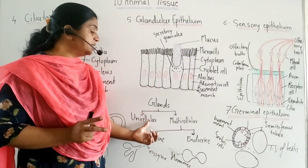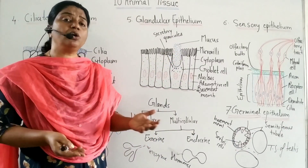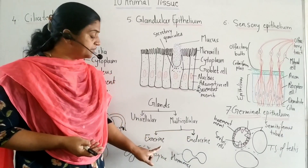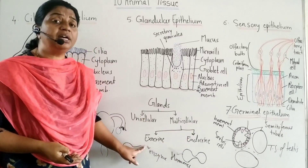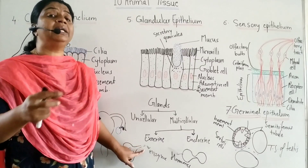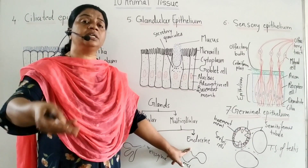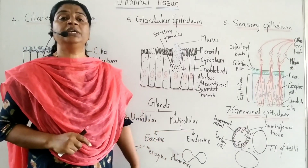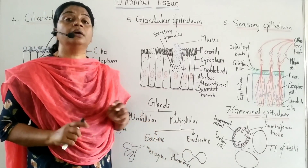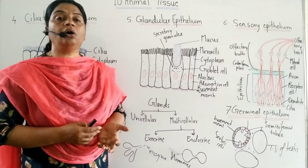Glands are of two types: unicellular or multicellular. Unicellular gland — for example, goblet cell. Multicellular gland means having a number of cells — example, salivary gland. Depending on the mode of secretion, they are divided into two types: exocrine and endocrine. A gland having a duct is called an exocrine gland; a ductless gland is called an endocrine gland. Exocrine glands carry their secretion to the site via a duct; endocrine glands pour their secretion directly into blood, which carries it to the site of action. Generally, exocrine glands secrete enzymes and endocrine glands secrete hormones. Goblet cells secrete mucus, which lubricates the respiratory or digestive tract.